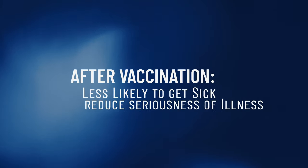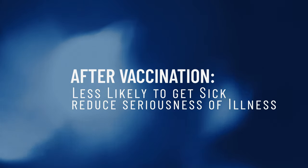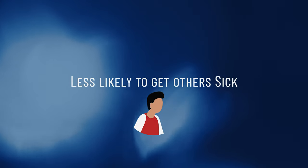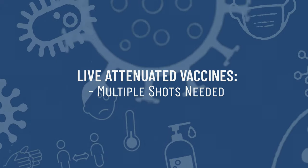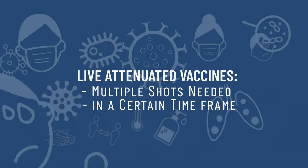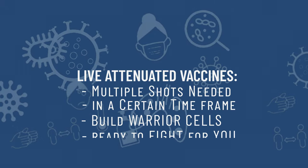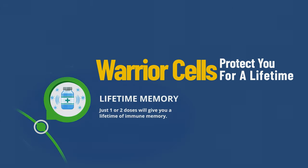After getting vaccinated against a particular disease, it is less likely that we will get sick with that disease and reduces the seriousness of illness if you do get sick. It is also less likely that we will make others sick. Live attenuated vaccines often need one or two shots against a disease within a certain time frame to build up your warrior cells to be ready to fight for you. Once a series of shots is complete, you will have more warrior cells that can more fully protect you for your lifetime.